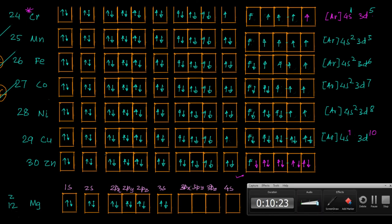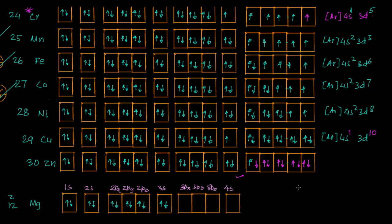So those are the exceptions you should understand: chromium and copper. You should remember them as exceptions while filling up orbitals, and you should understand why they occur.